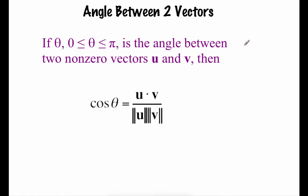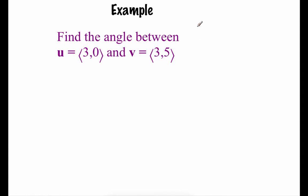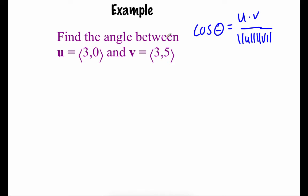If we're looking at finding the angle between two vectors, we're looking for angle theta between 0 and pi. The formula says the cosine of theta equals the dot product u·v divided by the magnitude of each vector. So writing that out: cos θ = (u·v) / (|u| · |v|). Let's do that dot product first: 3 times 3 is 9, plus 0 times 5 is 0, so the dot product across the top is 9.